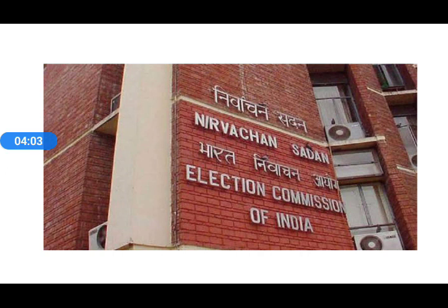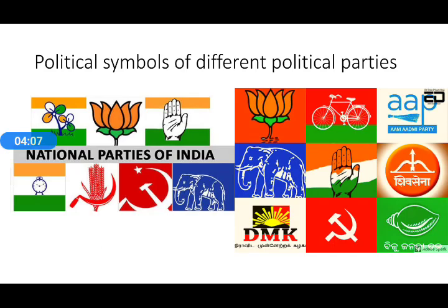The Election Commission has the power to register political parties, their common goals and interests, which help to generate public opinion in the process of choosing candidates. Any candidate having a criminal background can be debarred from contesting an election. This discretionary power lies solely with the Chief Election Commissioner.